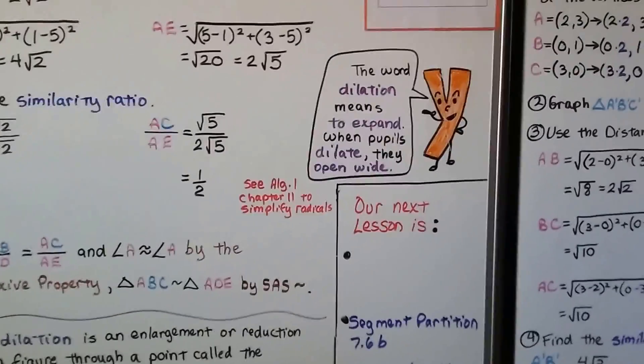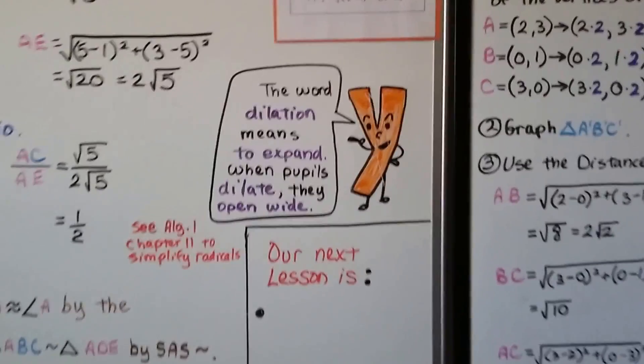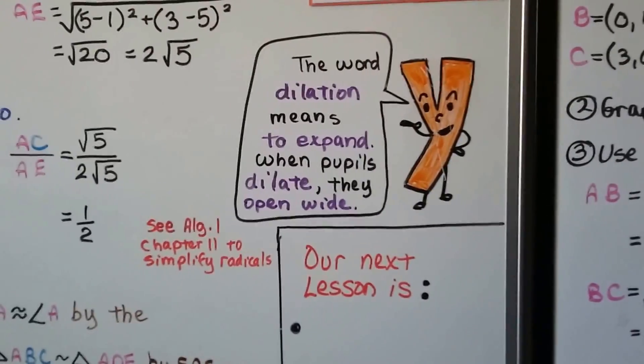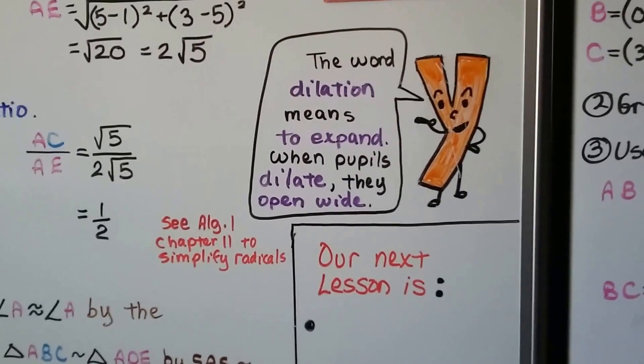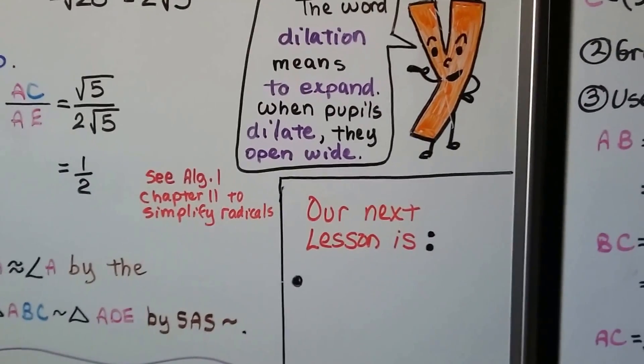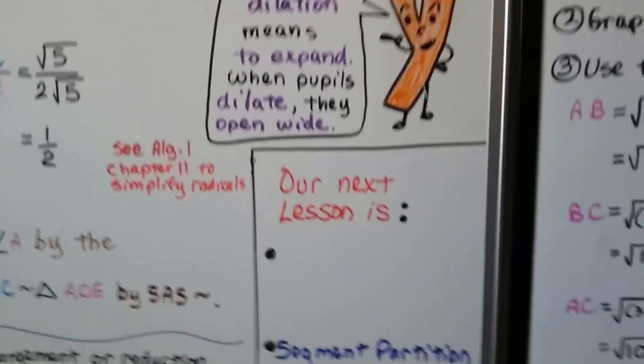The word dilation means to expand. When your pupils dilate, they open wide. When you go into a dark room, your pupils open up and get wider to let more light in. They can also go back down smaller when you go back out in the light.